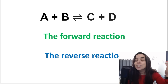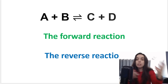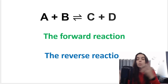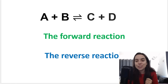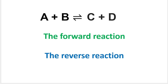A reaction is called a reversible reaction when the reactants and the products can be converted into one another. So the products can be converted back into reactants and vice versa. We get two half reactions: the forward reaction and the reverse reaction. We represent it with this double arrow over here.